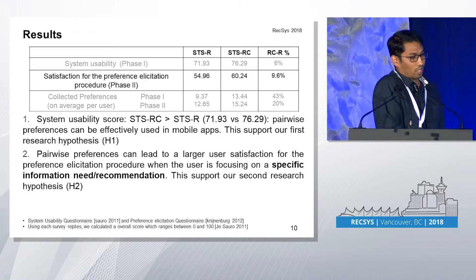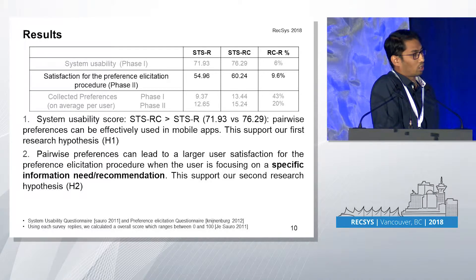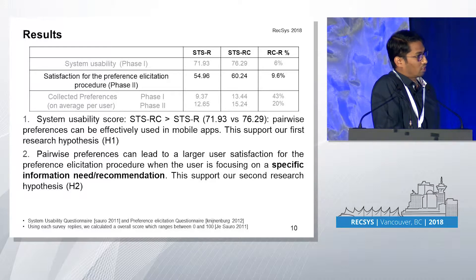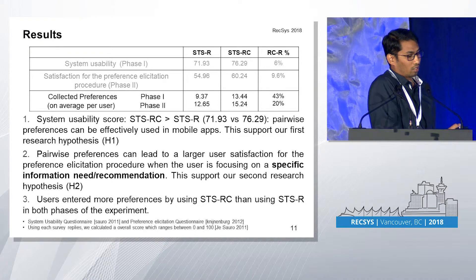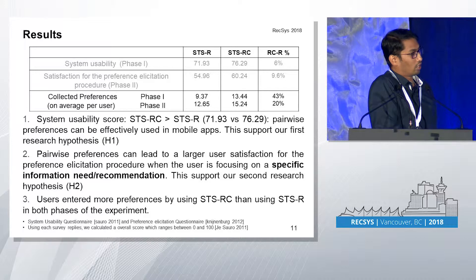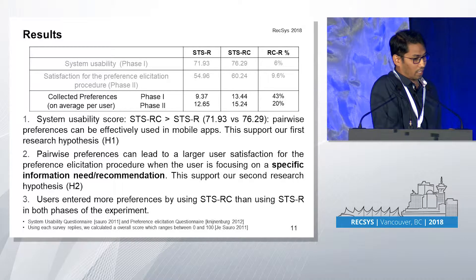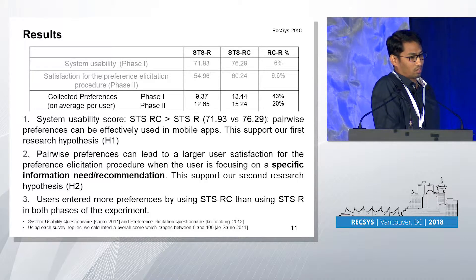Discussing usability results: the comparison variant has a better score compared to the rating variant. This supports our first research hypothesis. In phase two, when there is already a clear objective and the choice set is already reduced, the comparison variant again has better performance compared to the rating variant.